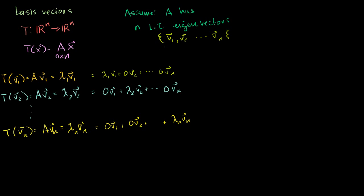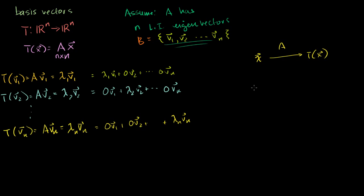Let's define this as some basis B made up of those eigenvectors. What I want to show you is that when I do a change of basis — in standard coordinates you give me some vector in Rn, I multiply it times A, and you get the transformation of it. We can do a change of basis: if you want to go from standard to the new basis, you multiply by C inverse. The change of basis matrix C is just a matrix with all of these eigenvectors as columns, and it's very easy to construct. If you want to go back, you multiply by C.